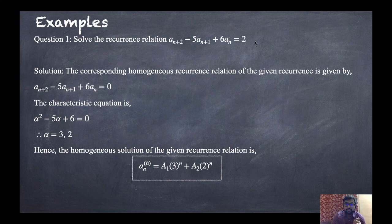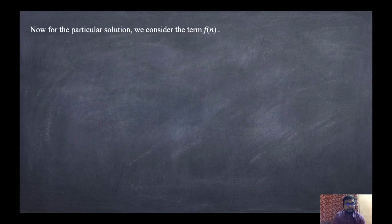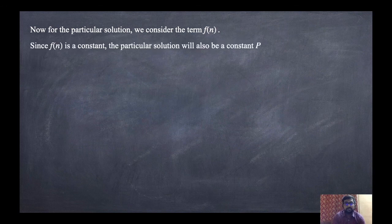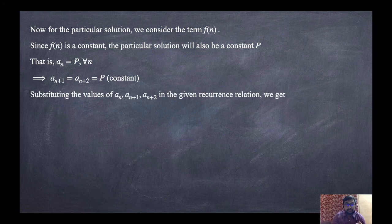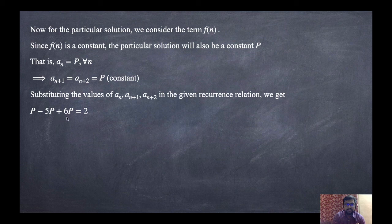For the particular solution, the right-hand side is a constant, so this is the first case. We consider F(N) as a constant and choose particular solution as constant P for every N. So AN+1 and AN+2 are both equal to P. Substituting into the recurrence relation: P minus 5P plus 6P equals 2, giving 2P equals 2, hence P equals 1.